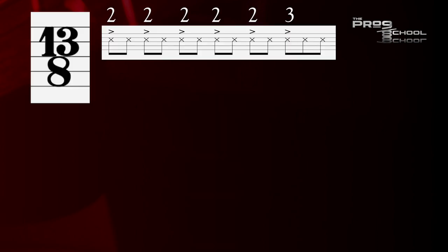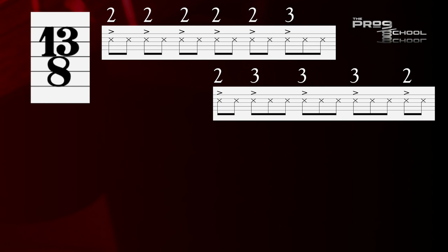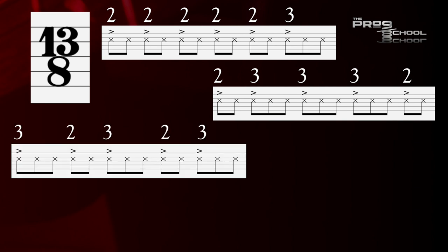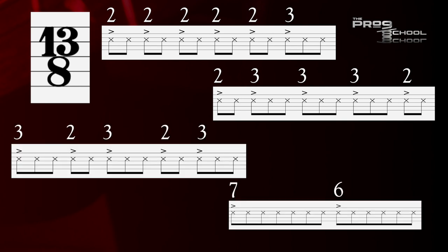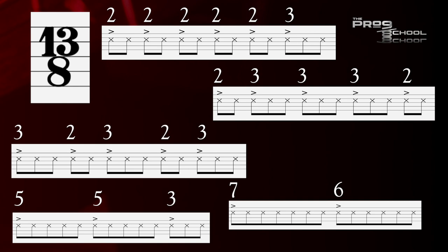But with a bigger time signature like 13/8, there's even more options: 2-2-2-2-2-3, 2-3-3-3-2, 3-2-3-2-3, 7-6, 5-5-3, and a whole bunch more.